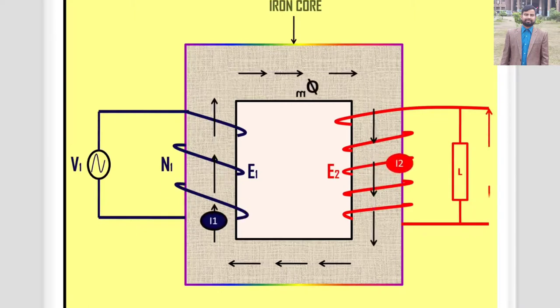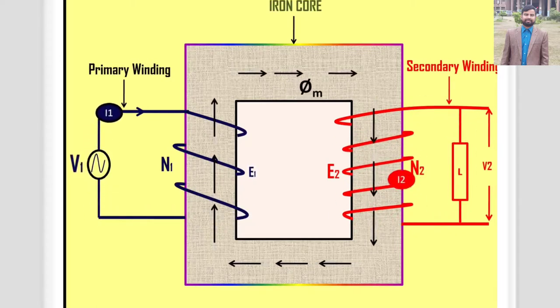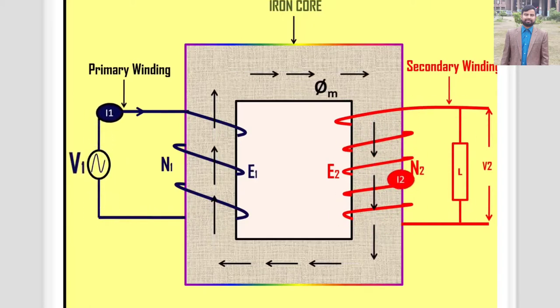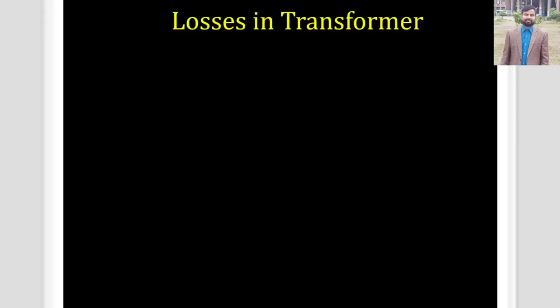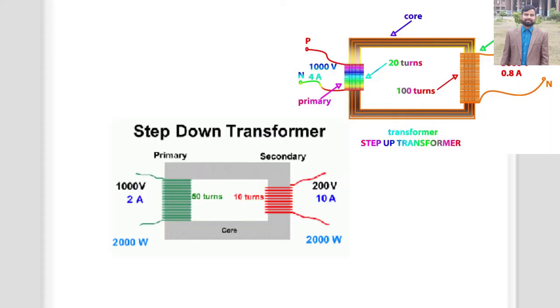Step-up transformers: reversing the situation, we can make a step-up transformer that boosts a low voltage into a high one. This time, we have more turns on the secondary coil than the primary. It's still true that secondary voltage divided by primary voltage equals number of turns in secondary divided by number of turns in the primary and secondary current divided by primary current equals number of turns in primary divided by number of turns in secondary. In a step-up transformer, we use more turns in the secondary than in the primary to get a bigger secondary voltage and a smaller secondary current.